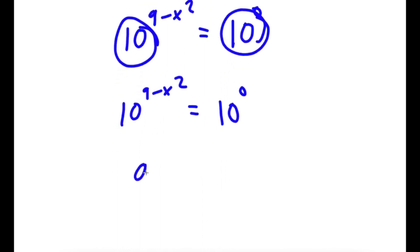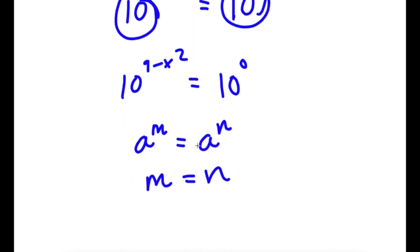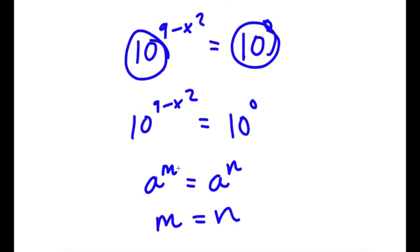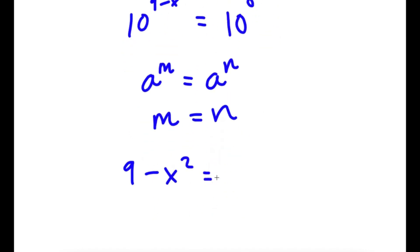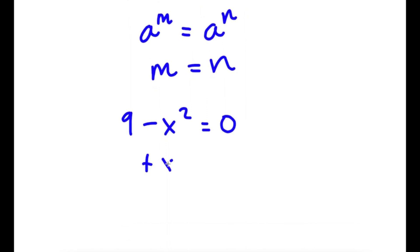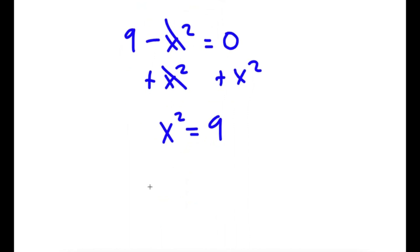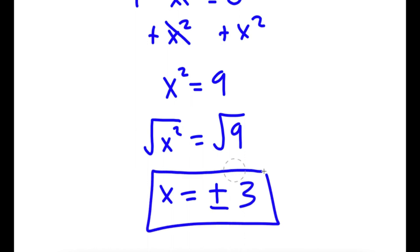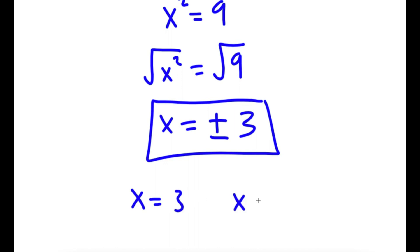If I have something in the form a to the power of m equals a to the power of n, this means that m equals n. Because both bases are 10, our exponents must be equal: 9 minus x squared equals 0. To solve this equation, I add x squared on both sides, so x squared equals 9. Taking the square root of both sides, x equals positive or negative 3. So my two solutions are x equals 3 and x equals negative 3.